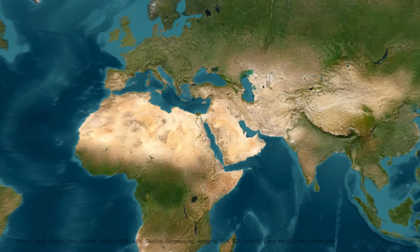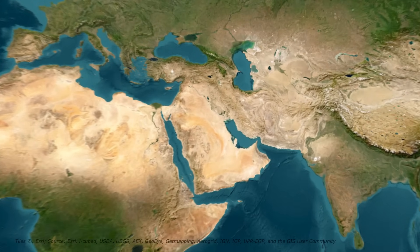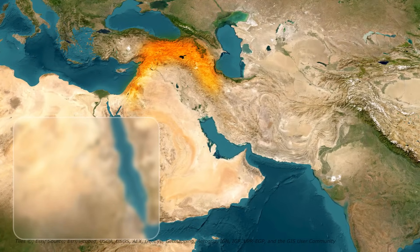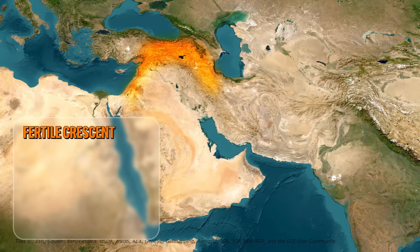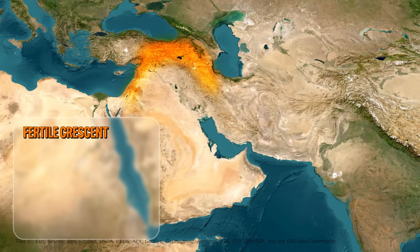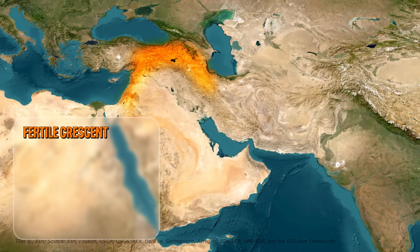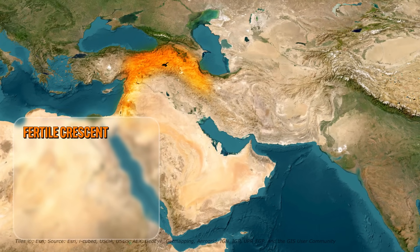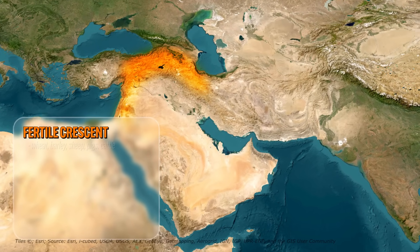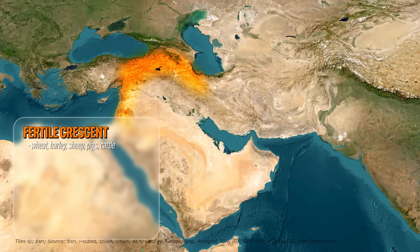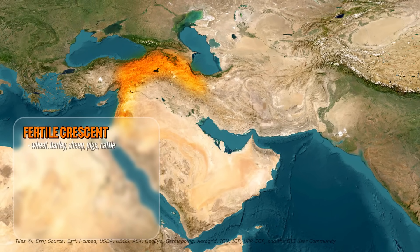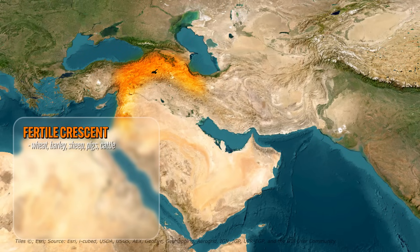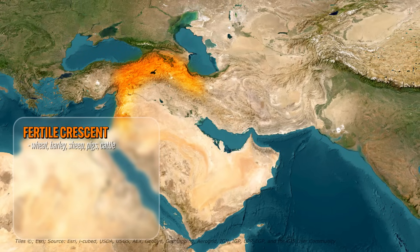Let's visit each of these locations real quick. First, here in Southwest Asia, we have the Fertile Crescent, which was the OG hearth of agriculture. Because they lived around the fertile soil between the Tigris and Euphrates rivers, they figured out how to plant wheat and barley, for example, and domesticated animals like cattle and sheep.